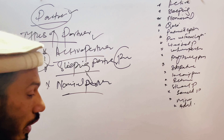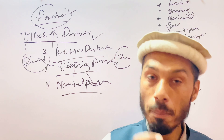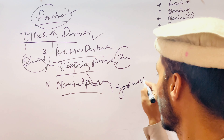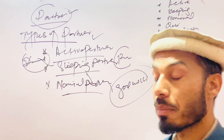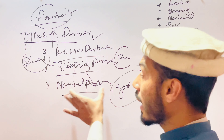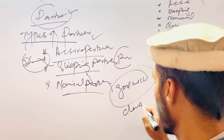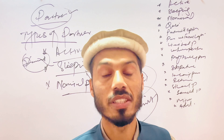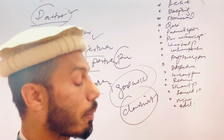The next type is the nominal partner. Nominal partners are not actual partners of the partnership business, but only their name is used — such as for goodwill. Celebrities, for example, can be nominal partners of a partnership business — not actual partners of the firm, but lending their name.